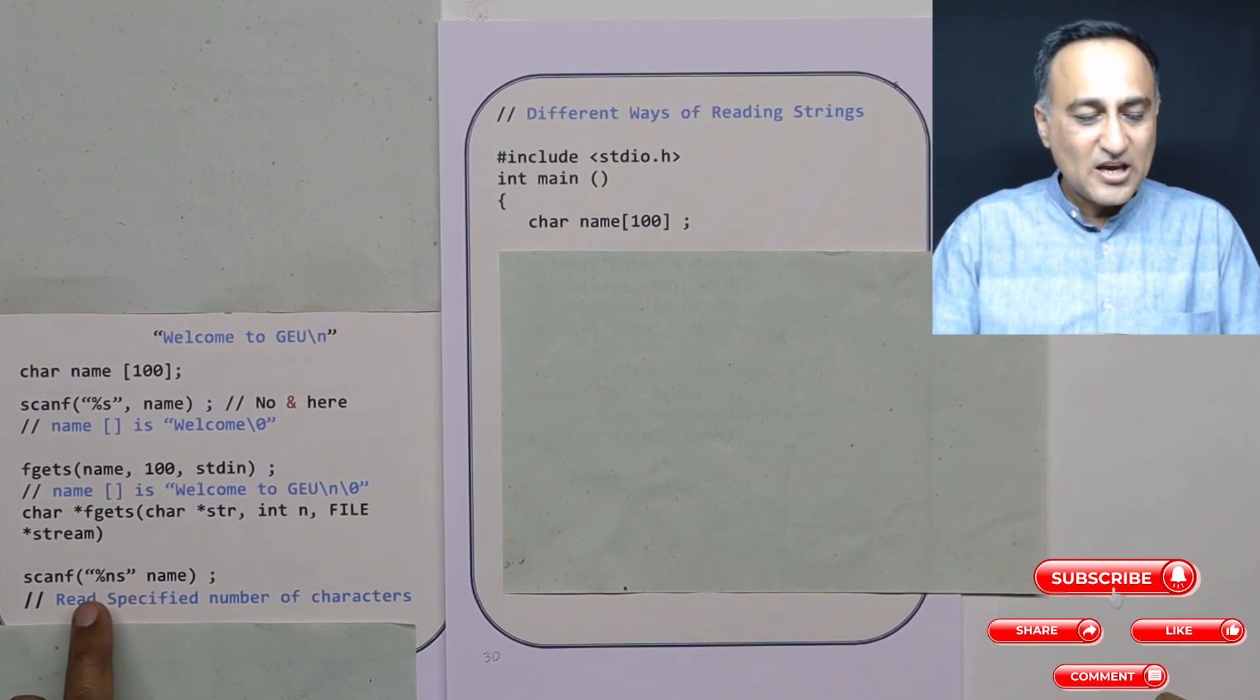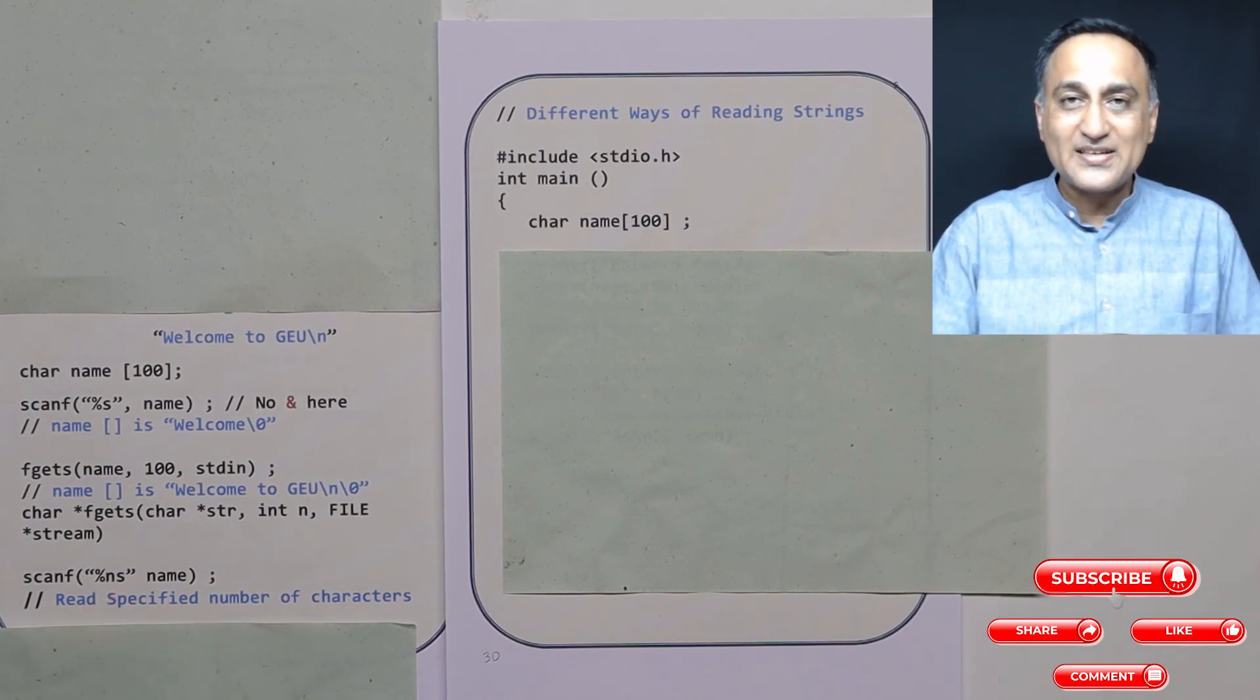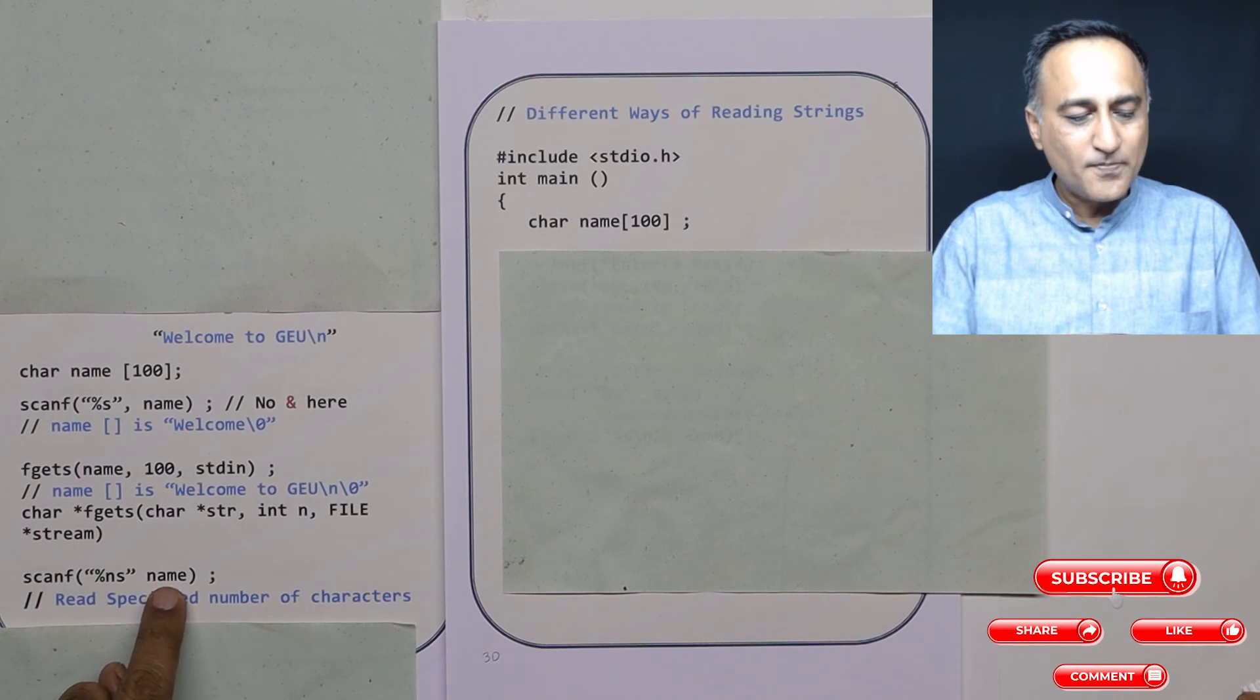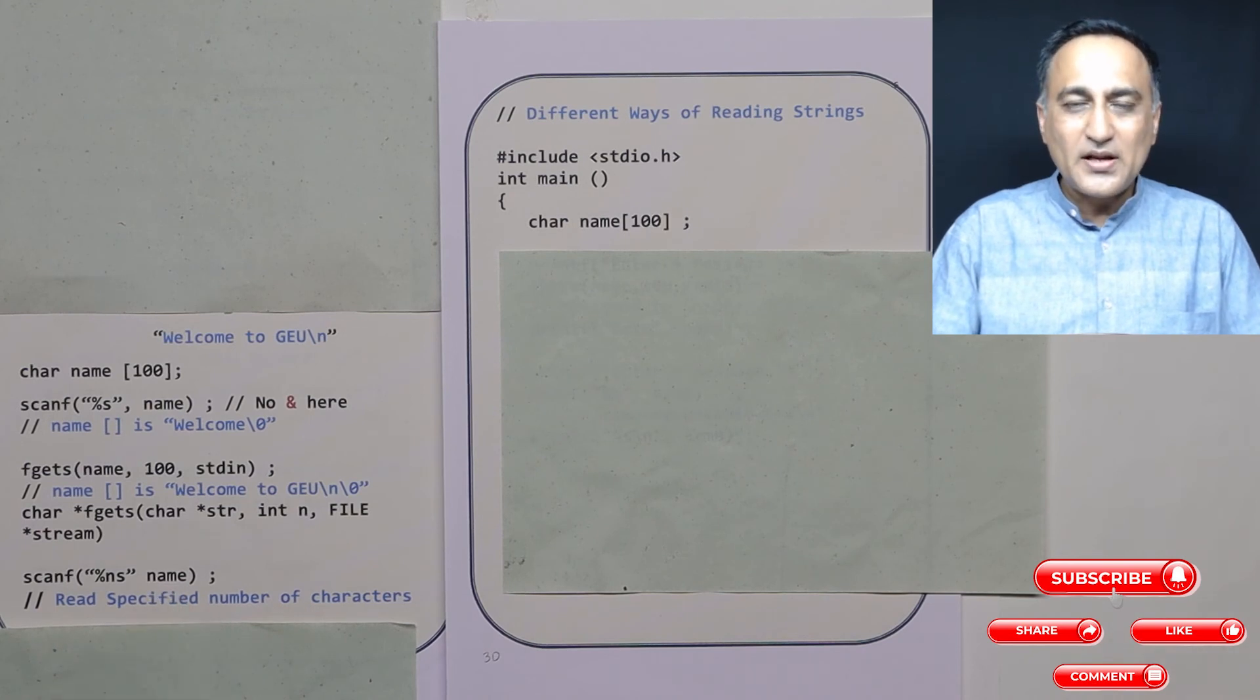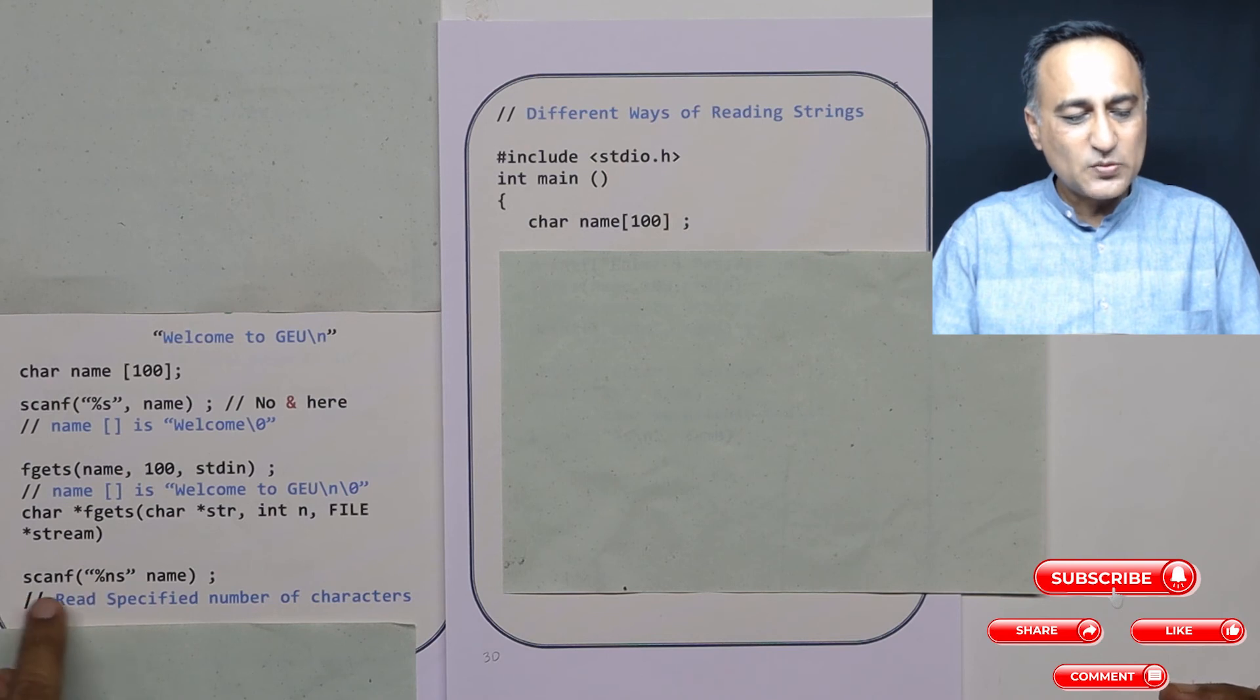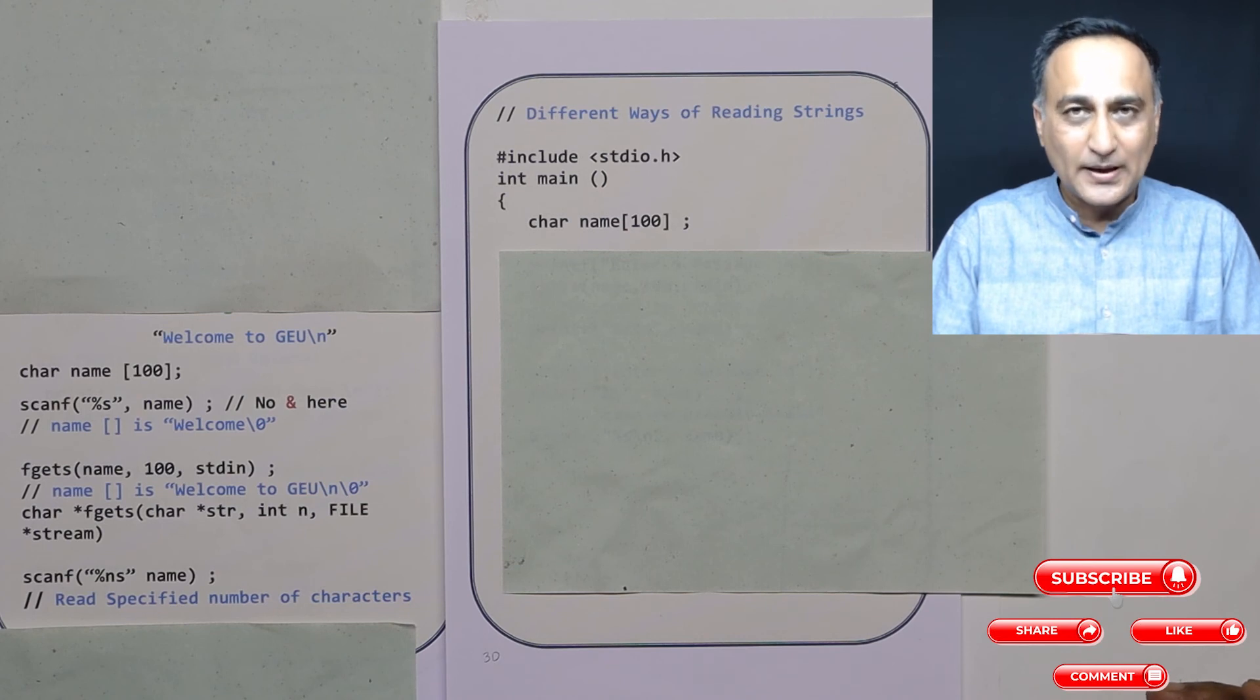So I just repeat, n indicates how many specified number of characters scanf is going to accept. After the number of characters, it will stop reading. So name is going to accept only that many number of characters as many as n is specified. This way, you're not able to have an overflow of characters into name.